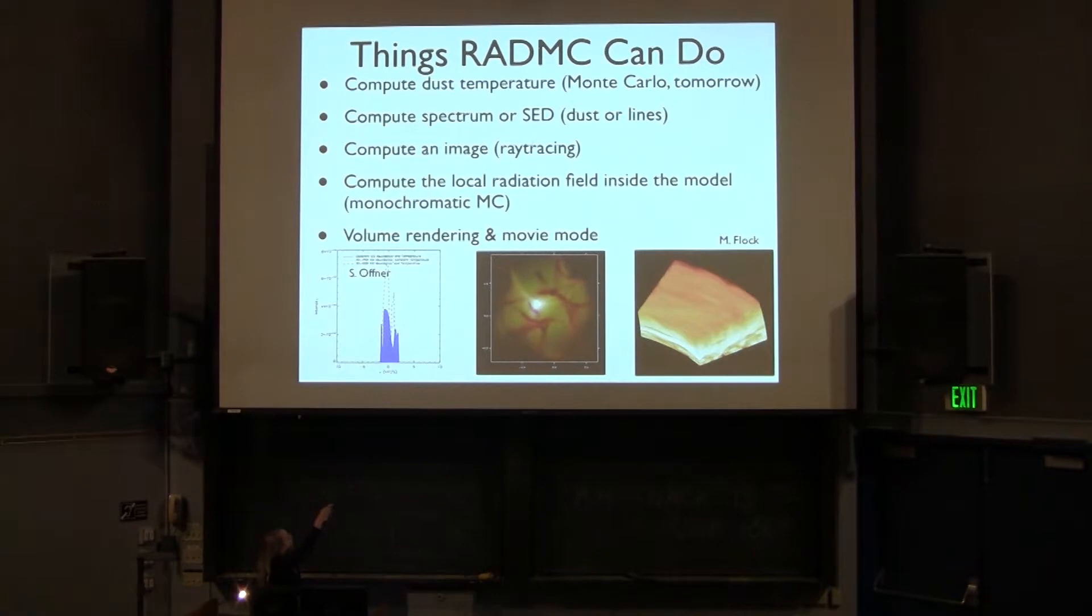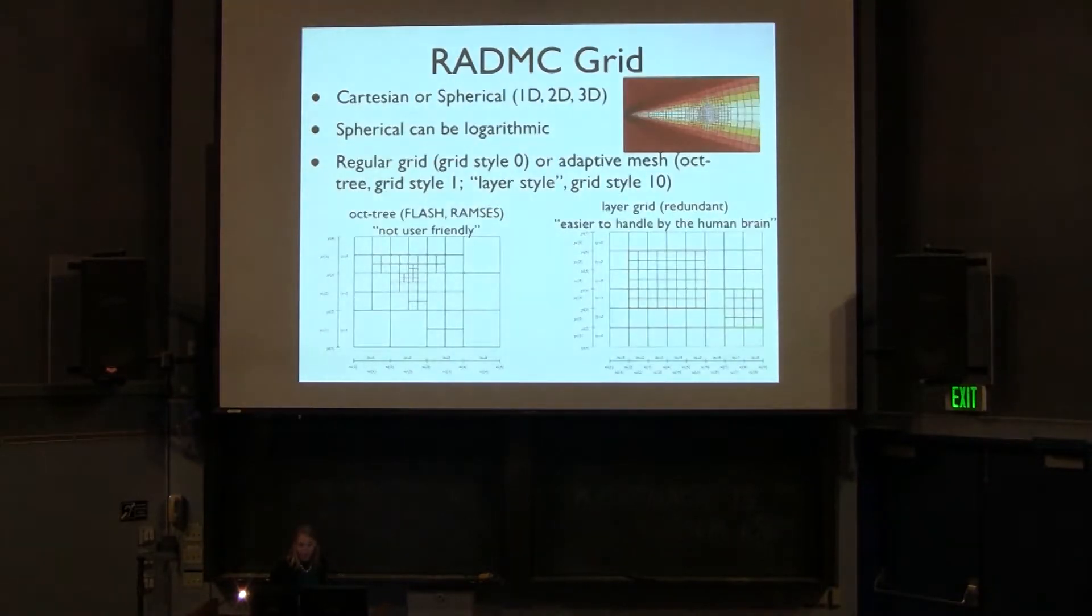It can also compute the local radiation inside the model. So you might wonder why you might want to do this if you have some external sources and you want to determine what the distribution of radiation is inside the model. For example, if you want to compute chemistry in post-processing, then this could be a handy feature. And finally, RADMC3D can actually do volume rendering. There is a movie mode. So you can make something like this.